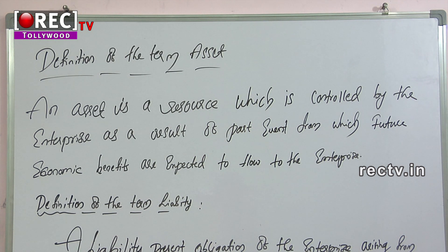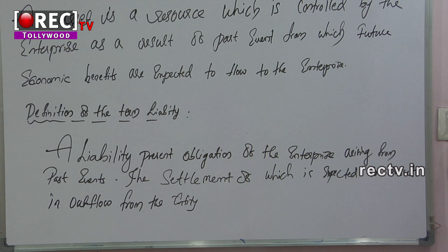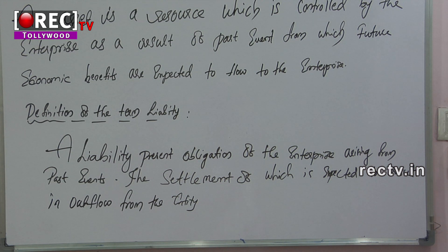A resource from which no future economic benefits are expected to flow is not treated as an asset. If an asset subsequent to its recognition does not meet the definition criteria, it has to be written off. Definition of 'liability': a liability is a present obligation of the enterprise arising from past events, the settlement of which is expected to result in an outflow from the entity. If there is no present obligation but a future obligation, we say there is a provision, not a liability.